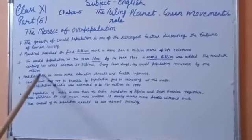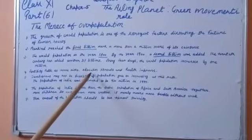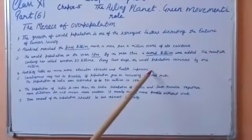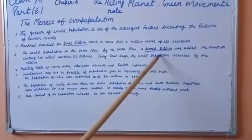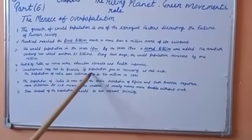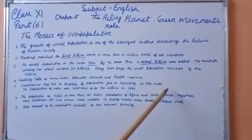Children, fertility falls as income rises and education spreads and health improves - this is the chief concern of each and every individual. Development may not be possible if population goes on increasing at this rate.